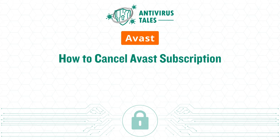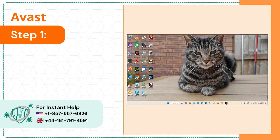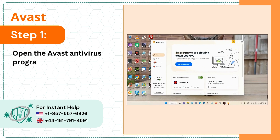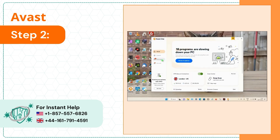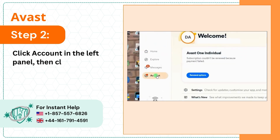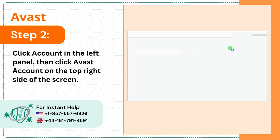How to Cancel Avast Subscription. Step 1: Open the Avast Antivirus Program. Step 2: Click Account in the left panel, then click Avast Account on the top right side of the screen.